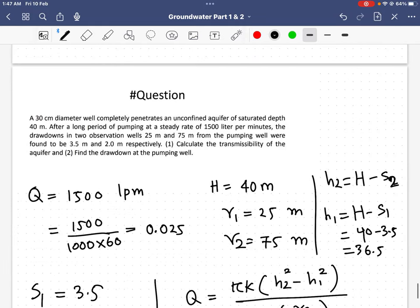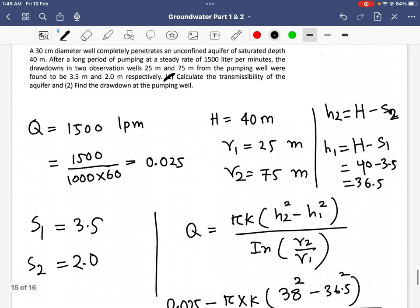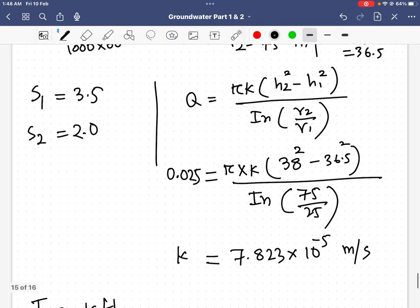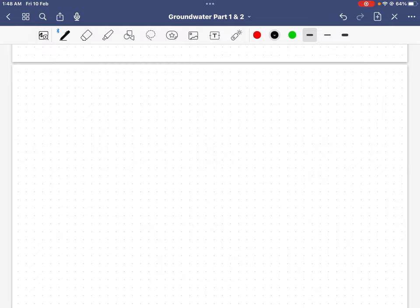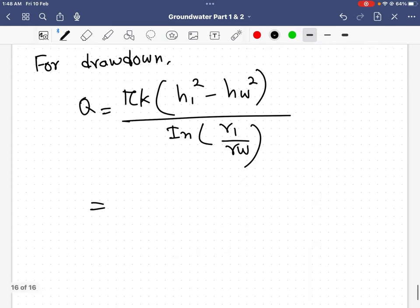I already found the transmissibility. Now I will go for the second question: find the drawdown at the pumping well. For this, I will solve through the formula we already know for drawdown.